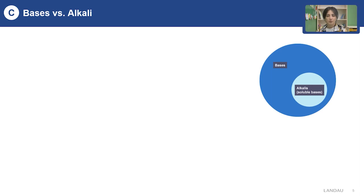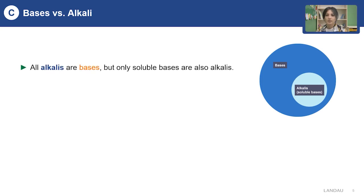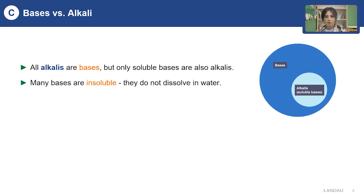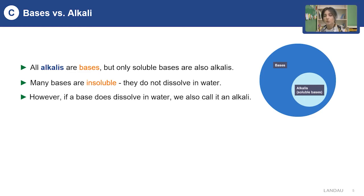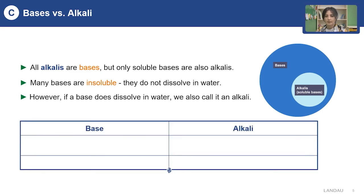Do you know the difference between the terms alkali and base? Bases can exist in two ways: insoluble bases and soluble bases. Insoluble bases cannot dissolve in water, and we call them just bases. But soluble bases can dissolve in water, and we call them alkalis. So to summarize: not all bases are alkalis, but all alkalis are bases.